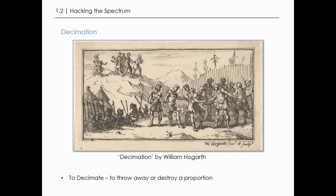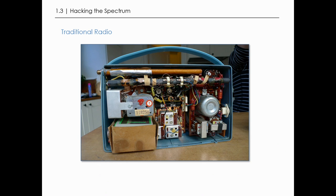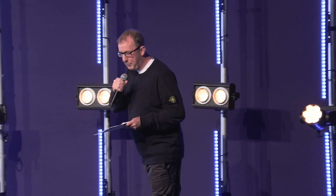This is the inside of a traditional radio. If you've ever taken one apart, you'll recognize it immediately. It's from about the 1970s — a Telefunken — a very beautiful radio. Everything is done in hardware. This is the result of over 100 years of electronics evolution since radio was invented in 1895. It's a brilliant design — the combined genius of thousands of engineers.